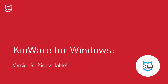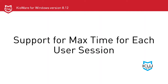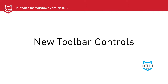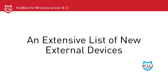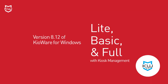Version 8.12 of KeyWare for Windows is now available. This version adds support for setting max time for each user session, new toolbar controls, hot virtual keyboard support, and support for an array of new devices, including cash dispensers, acceptors, barcode readers, and more. Version 8.12 of KeyWare for Windows is available in models: Light, Basic, and Full with kiosk management.